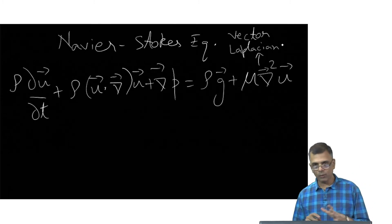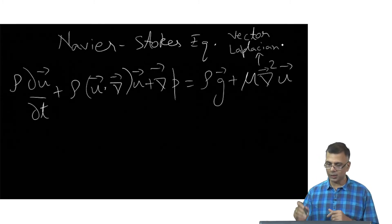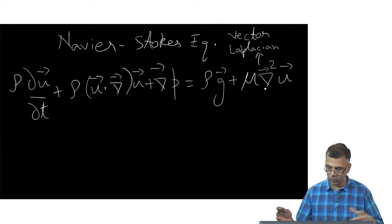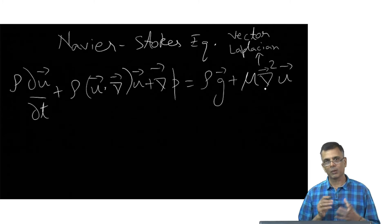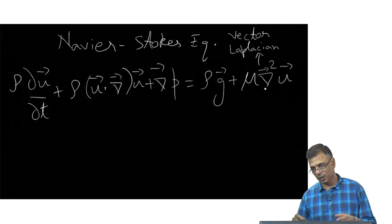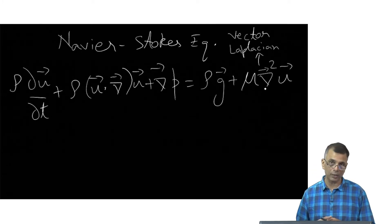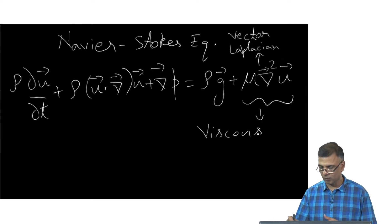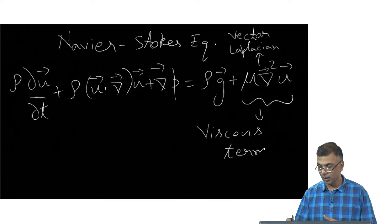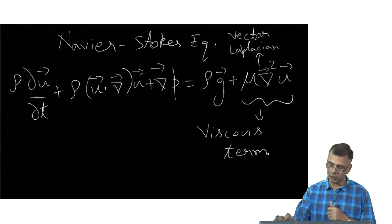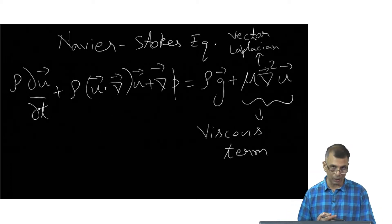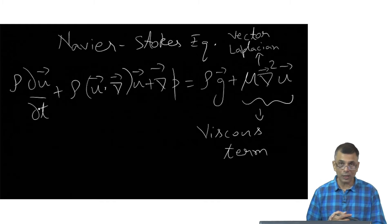Remember we wrote this down in a few different forms. One of the forms bundled several terms together, but this is a slightly more popular way of writing the Navier-Stokes equation. This entire term is the viscous term, and this is what in some sense makes it the Navier-Stokes equation. If the viscous term was not there, this is just the Euler equation, which does not take viscosity into account.